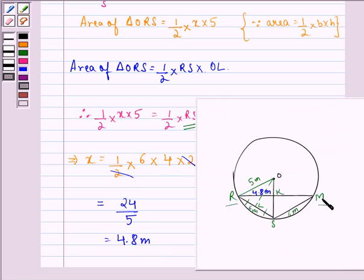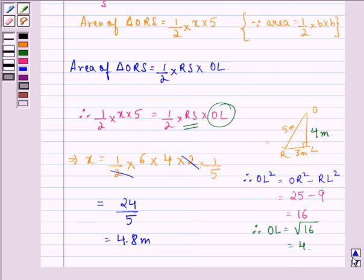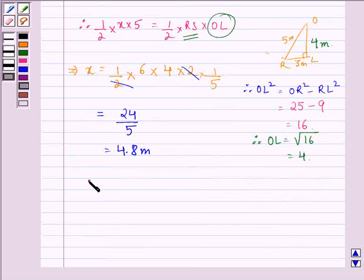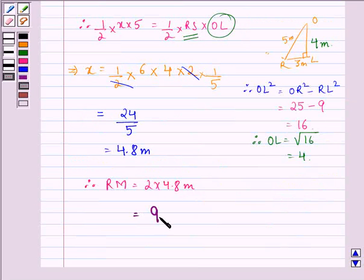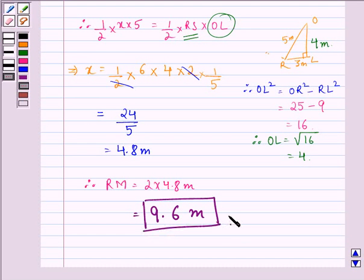We have to find RM. Since K is the midpoint of RM, RM equals 2 times 4.8 meters, which equals 9.6 meters. This is our answer. I hope you understood the question and enjoyed the session.